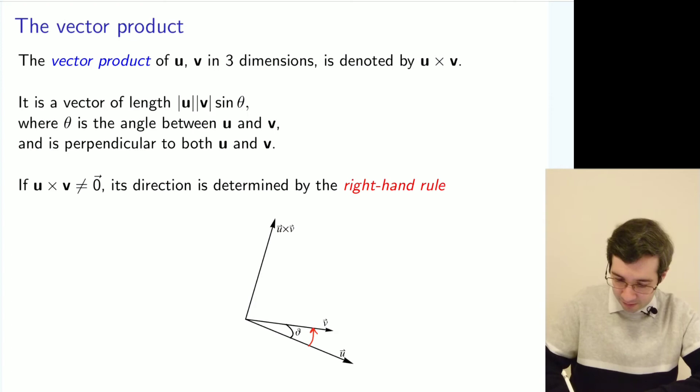If you have a vector and you rotate it towards another vector, then according to the right-hand rule you will get the vector product between these two vectors.